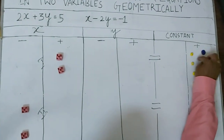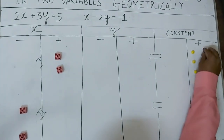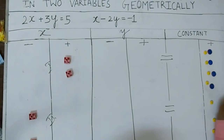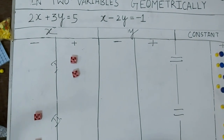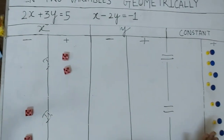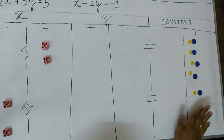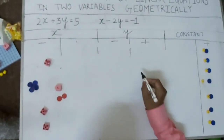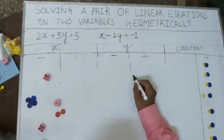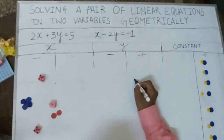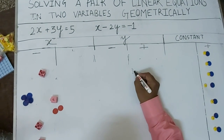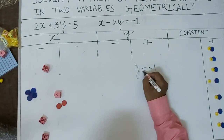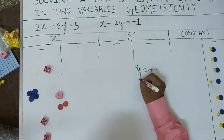So all 7 y's correspond to 7 ones, which means y is equal to 1. We got y equal to plus 1.